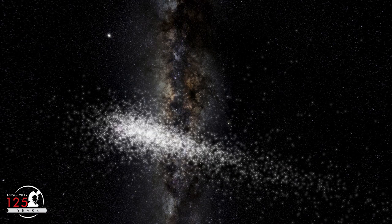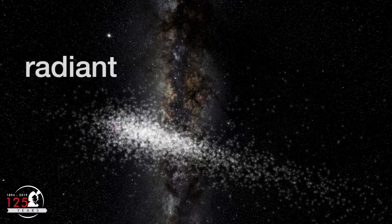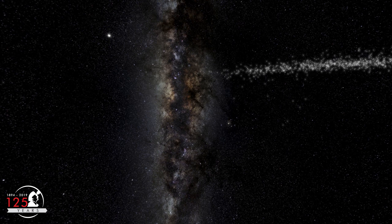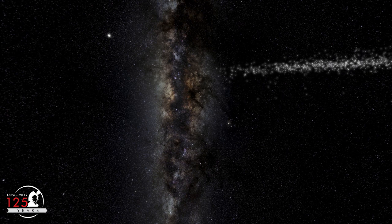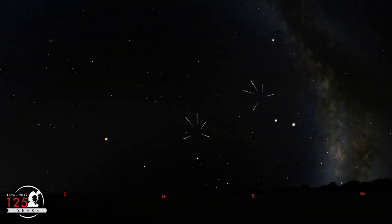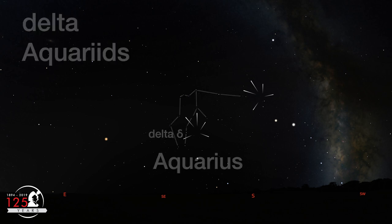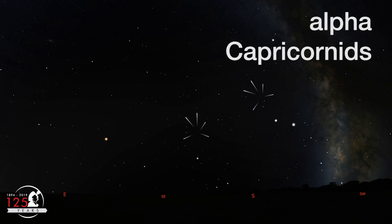Meteor showers are named for the point in the sky where the meteors appear to originate, called the Radiant. The location of the Radiant depends on the combined motion of the Earth and the meteoroids. These two meteor showers happen to have radiance that are near each other in the sky. The Radiant of the Southern Delta Aquariids is near the star Delta in the constellation Aquarius, and the Radiant of the Alpha Capricornids is near the star Alpha in the constellation Capricornis.